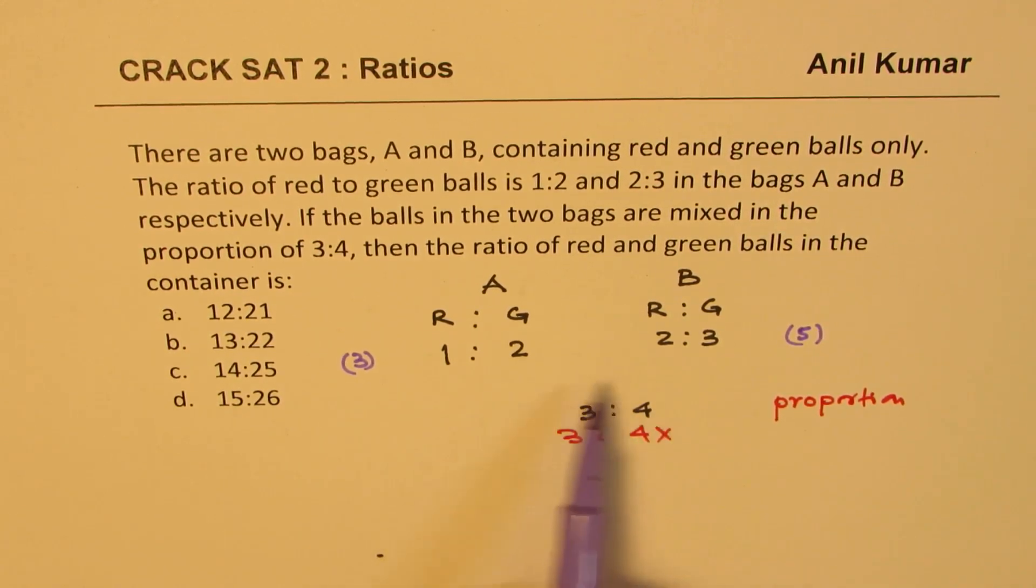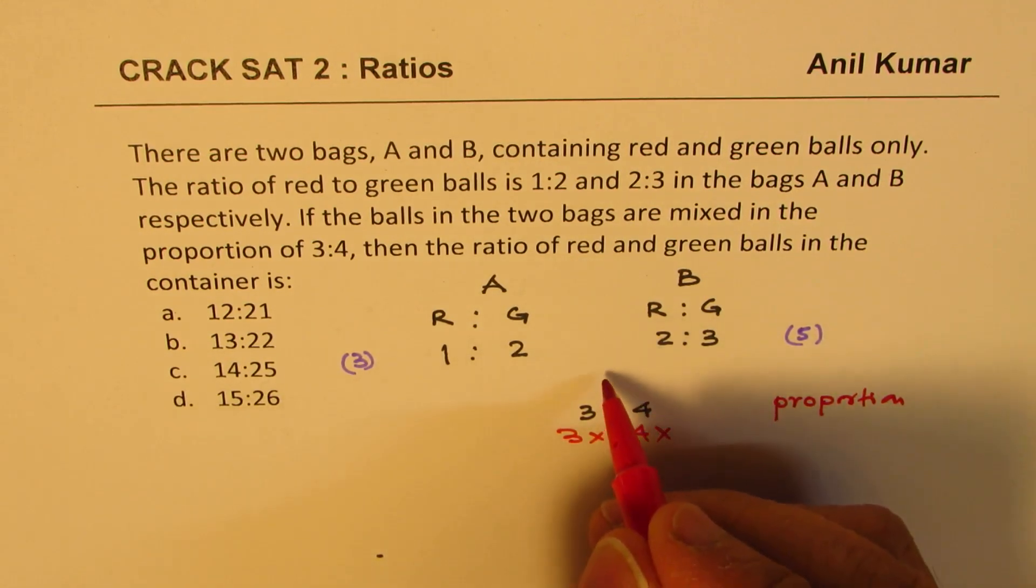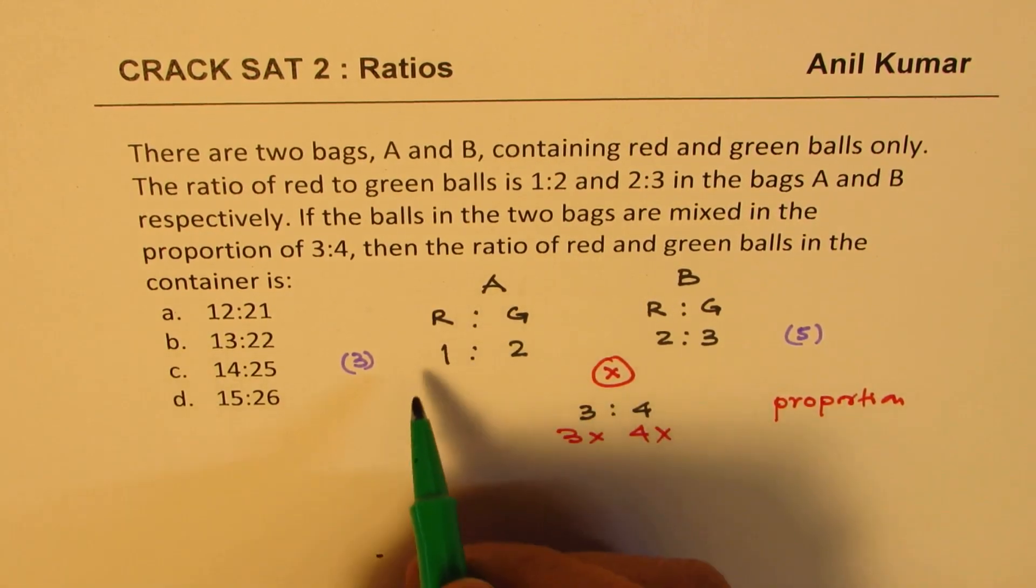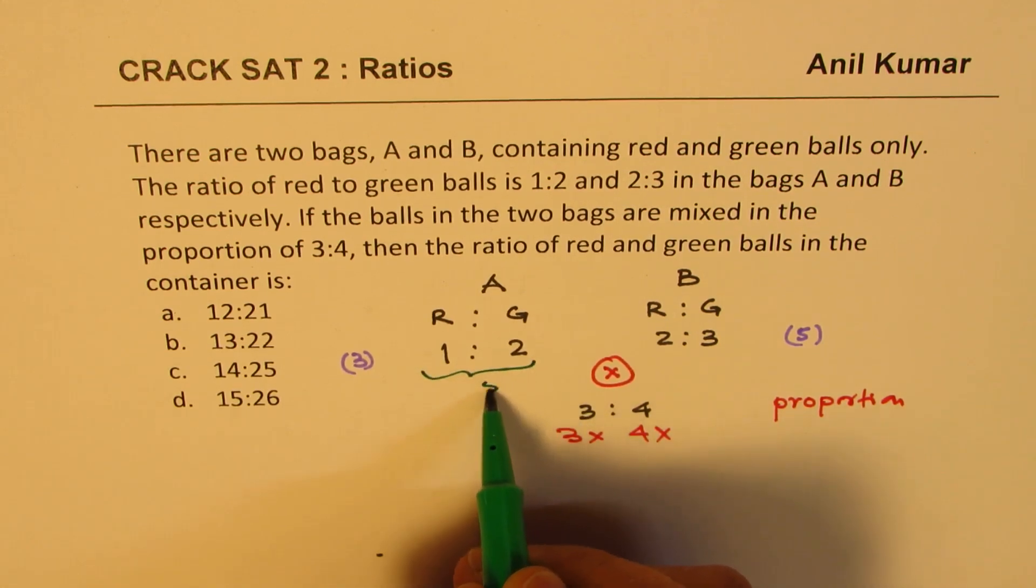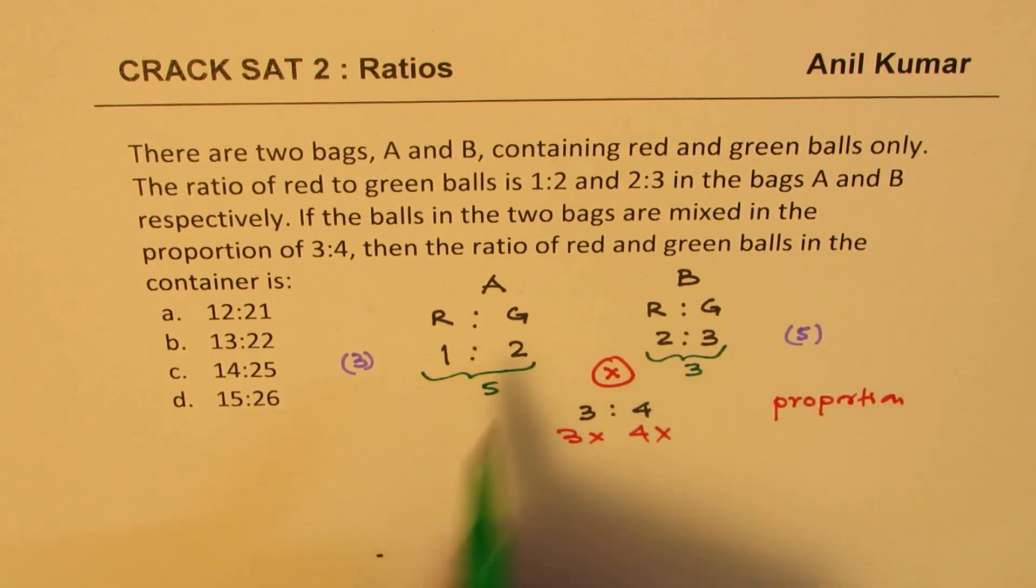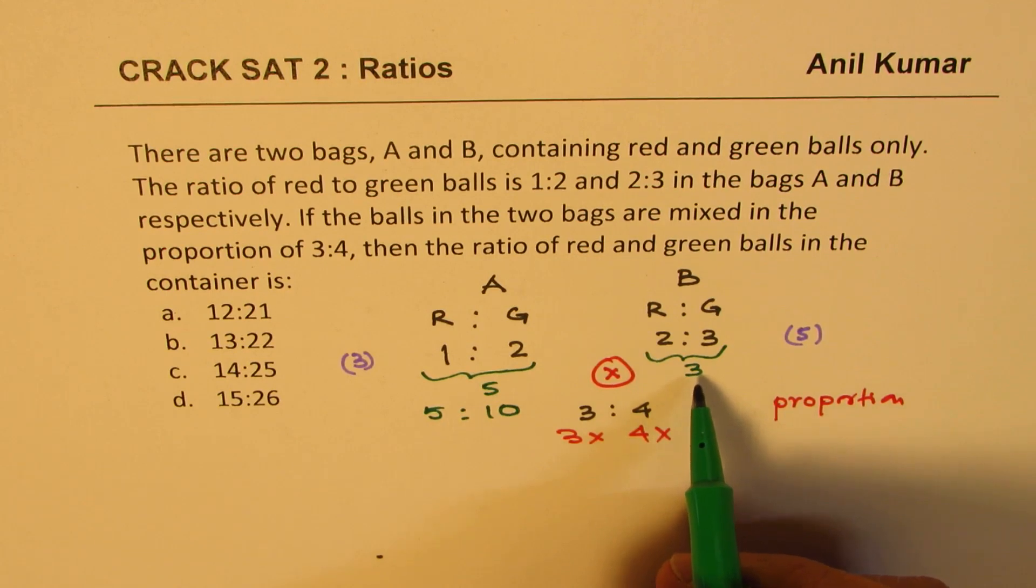How do I make the same quantity x in both? And then we could actually work out a number. You can make the same quantity x in both if you multiply this term by 5 and this term by 3. So if you do that, what do you get? 5 is to 10. So the ratio of red to green will be 5 to 10 and in this case it will be 6 to 9.